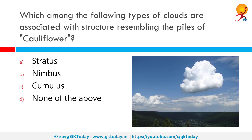Which among the following types of clouds are associated with a structure resembling piles of cauliflower? The correct answer is cumulus clouds, which are puffy clouds that sometimes look like pieces of floating cotton. The base of each cloud is often flat.